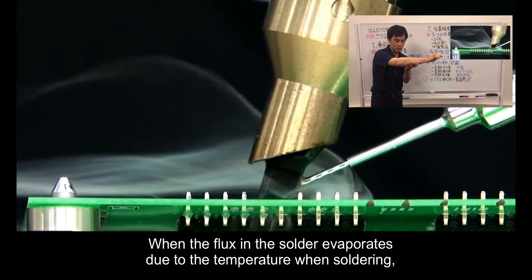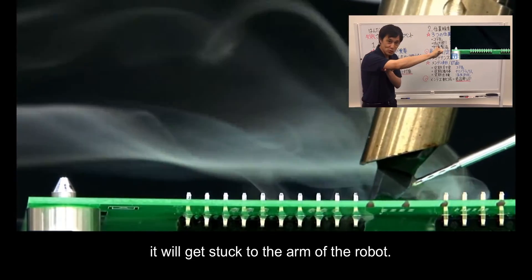When the flux in the solder evaporates due to the temperature when soldering, it will get stuck to the arm of the robot.